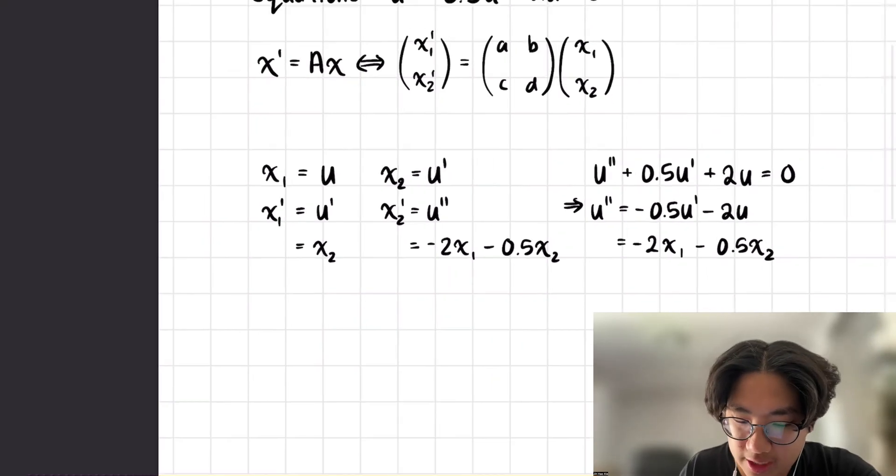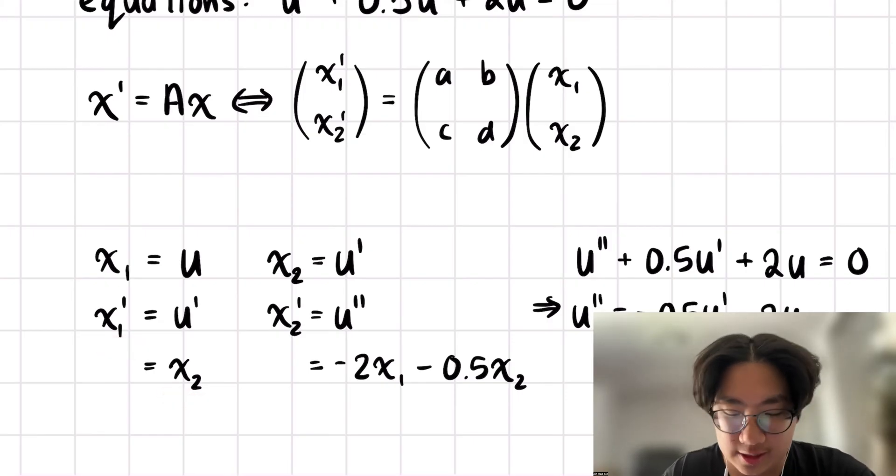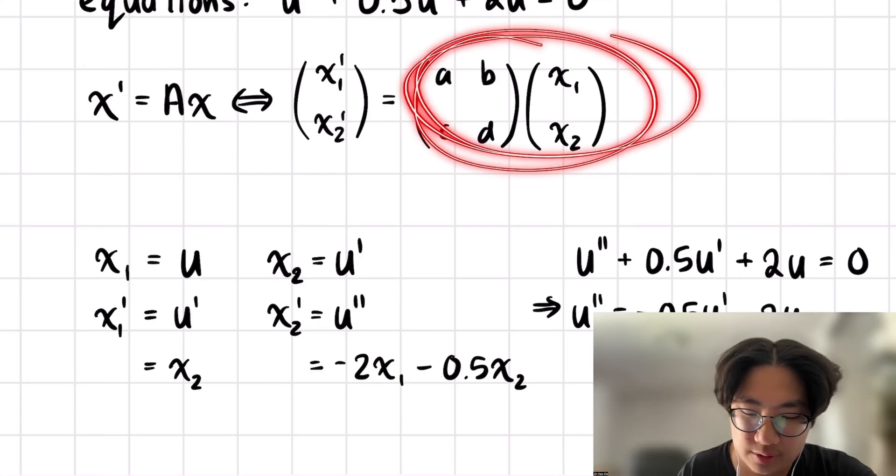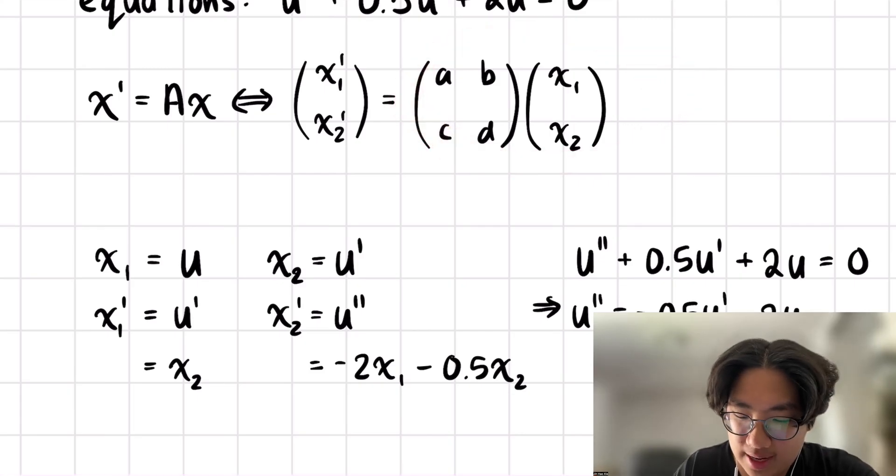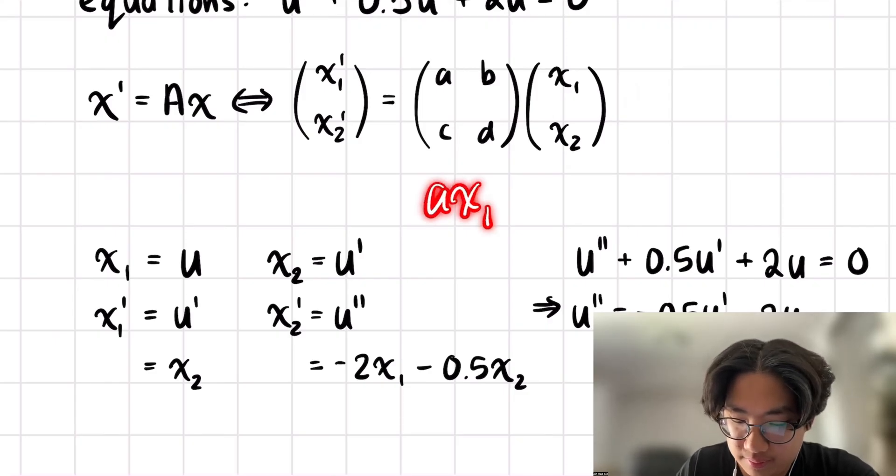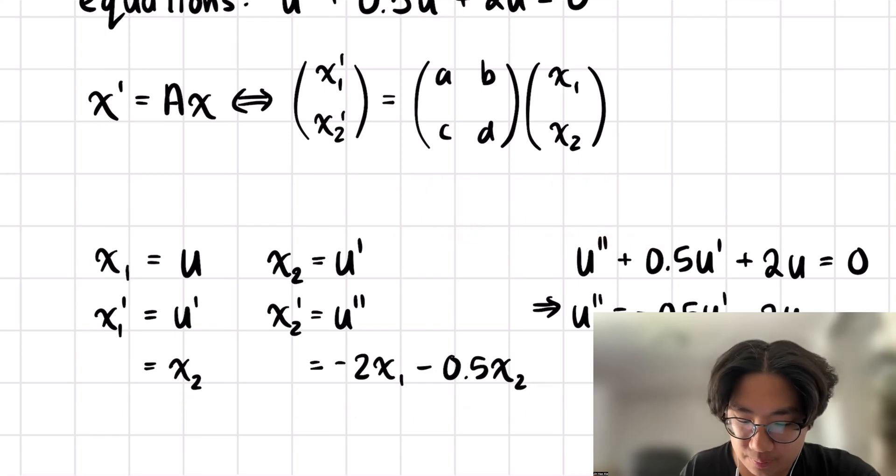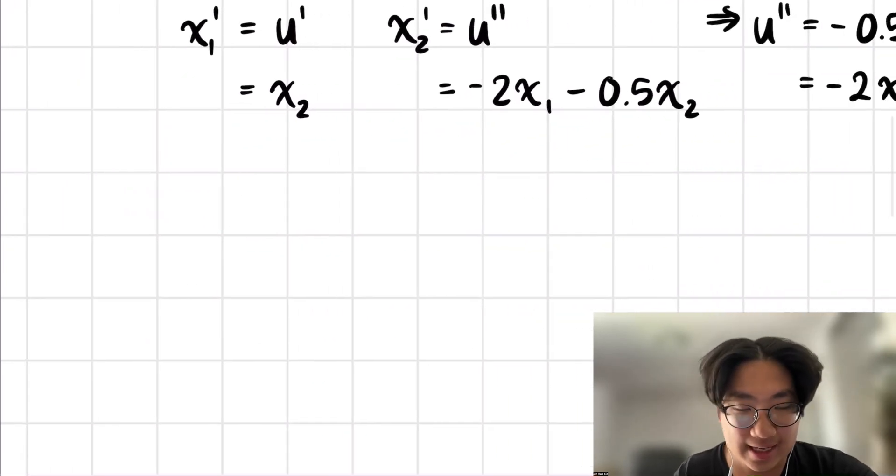So things are already taking shape now. We notice that we have x1 prime equal to something only in terms of x1 and x2, same thing with x2 prime. Which is exactly what we're looking for, because you can expand this right here if you just do matrix vector multiplication, and you'll get something like ax1 plus bx2. We're trying to match these into this formula. With this in mind, we can then write this as a system.